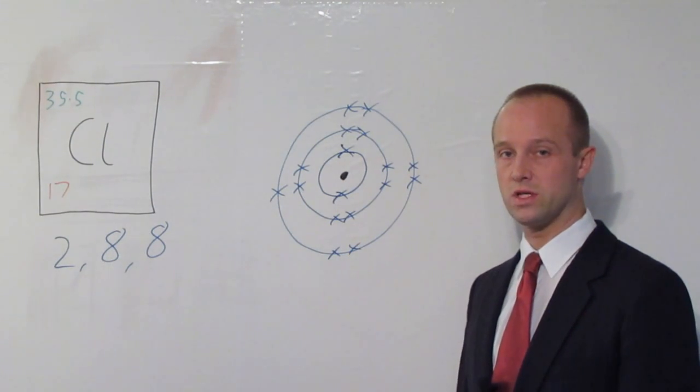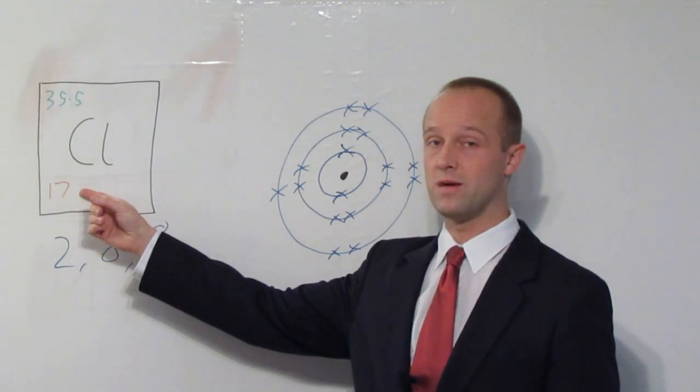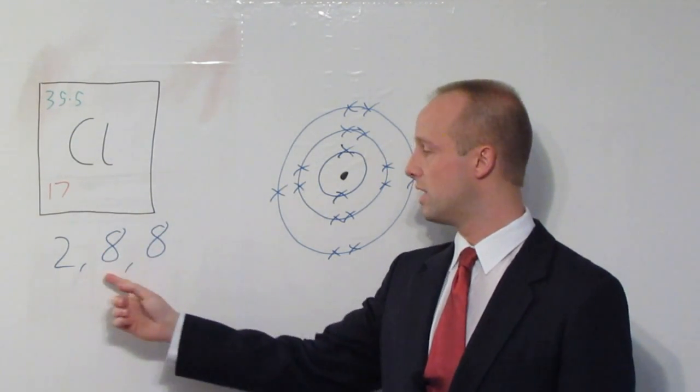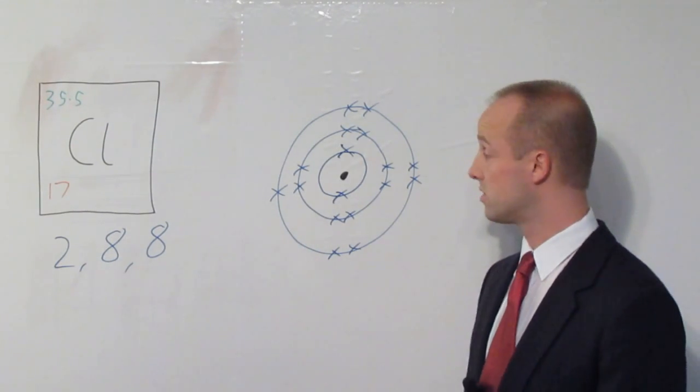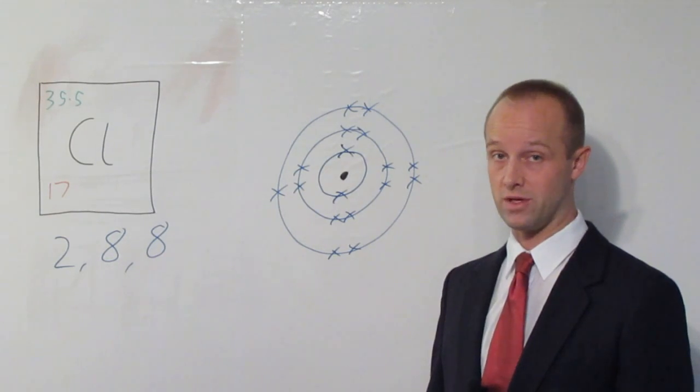So, there we go. A complete electron structure diagram for chlorine. All you need to know, small number is how many electrons you've got, and 2, 8, 8. And you should be able to draw electron structure diagrams for pretty much any of the first 20 elements in the periodic table now.